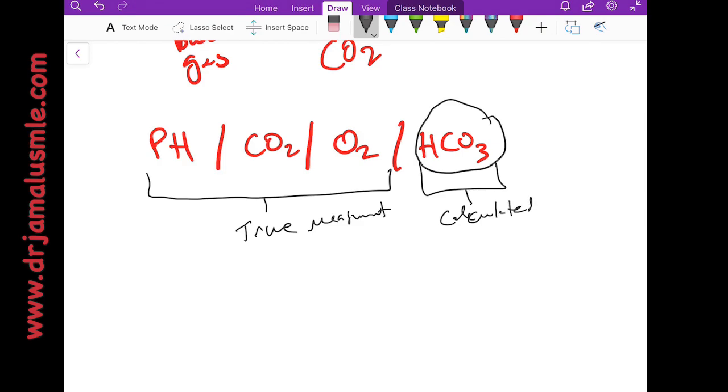Usually it's within the right range, but to be more accurate the bicarb value should be from a basic metabolic panel from a venous draw. Nevertheless, you can use it for your interpretation of an ABG.